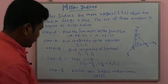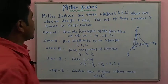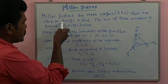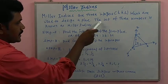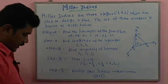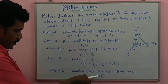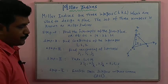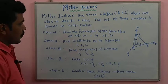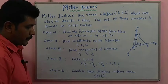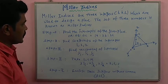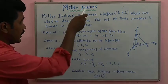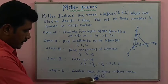Miller indices are three integers h, k, l which are used to designate a plane. These three numbers are known as Miller indices — for example, (2 1 1). Understanding how to find these three integer values is very useful to identify what type of planes they represent.